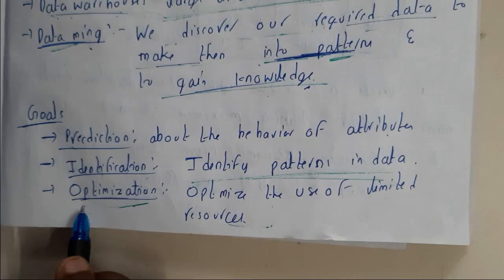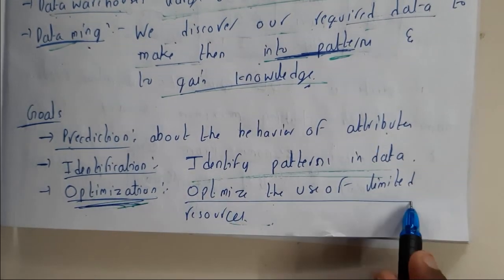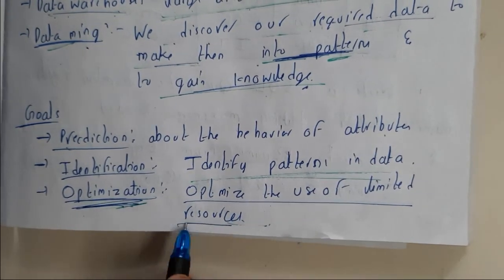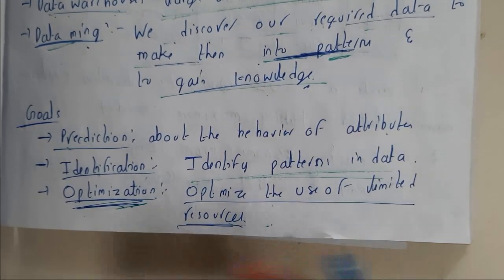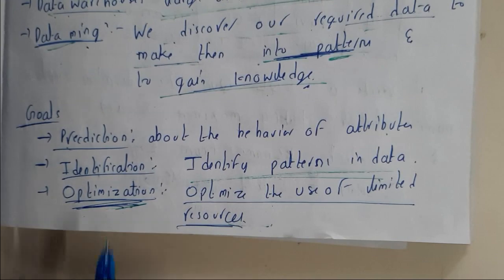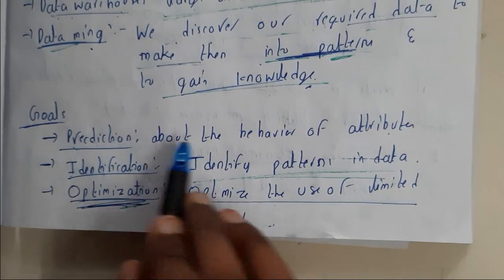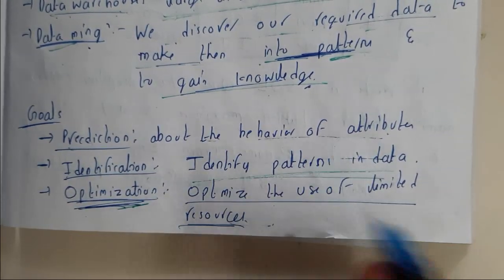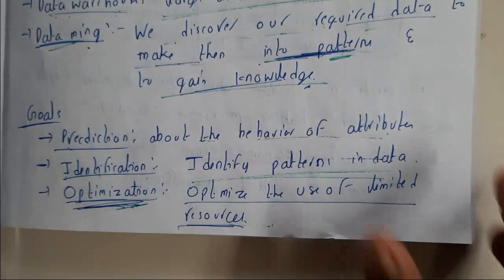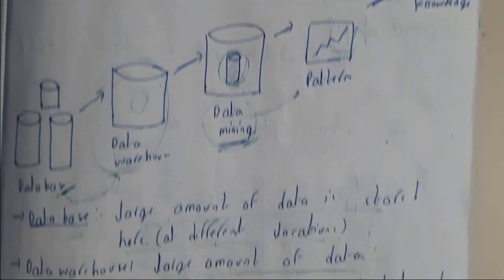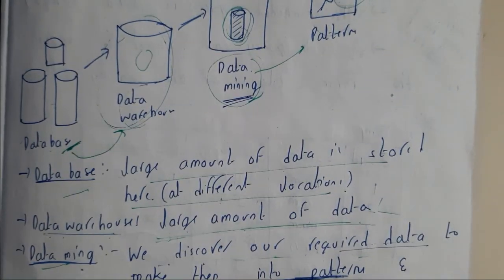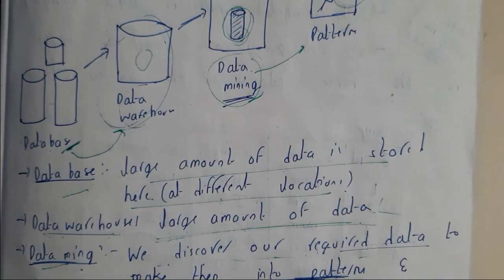The first goal of data mining is to optimize usage of resources to the least limit, and also for identifying patterns and understanding behavior about the attributes. In the next tutorial we will be starting SQL commands. Thank you for watching.